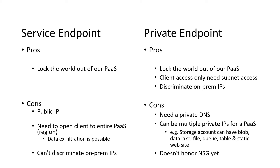A second con is that private endpoint may require many private IPs. For example, a storage account needs one private IP for blob, one for Data Lake, one for file, one for queue, one for table, and one for static website — that's six private IPs for one storage account. Many organizations have a limited supply of internal private IPs, especially when their on-premises network merges with their Azure private network, so consuming multiple IPs per private endpoint can be an issue. Also, you cannot use NSGs to control inbound rules on the private endpoint subnet; you must use NSGs on the source subnets.